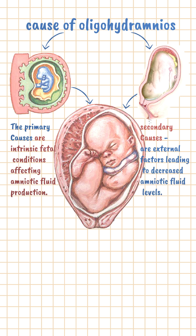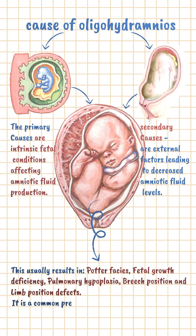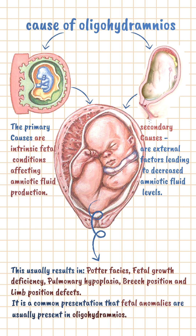When oligohydramnios is present, it usually results in Potter facies, fetal growth deficiency, pulmonary hypoplasia, breech position, and limb position defects. It's actually pretty common to find fetal anomalies in oligohydramnios cases. All of them are listed in the description, so check that out.